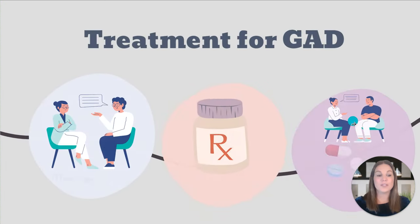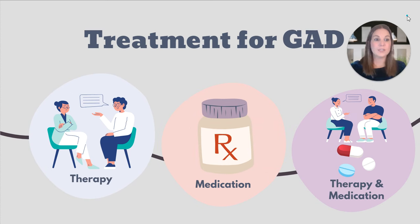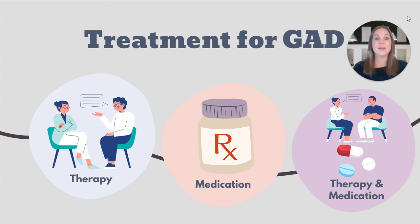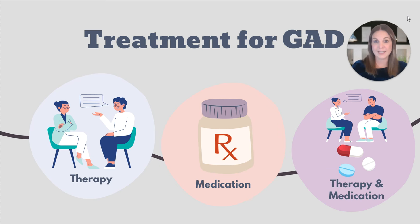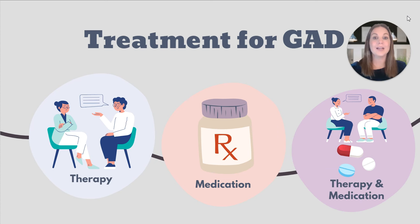Once the diagnosis of generalized anxiety is made, you'll want to start discussing those treatment options. We always want to be practicing shared decision-making because the best treatment options are going to be the ones that patients are comfortable with. Generally speaking, treatment should include psychotherapy and/or medications. Cognitive behavioral therapy is recognized as the preferred psychotherapy for patients experiencing generalized anxiety disorder. However, when anxiety symptoms are more severe, it can be hard to participate in therapy, so medications might need to be the first option.